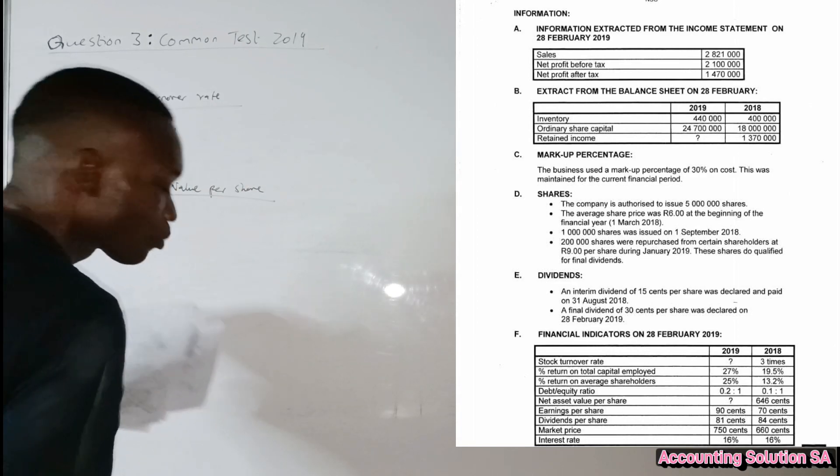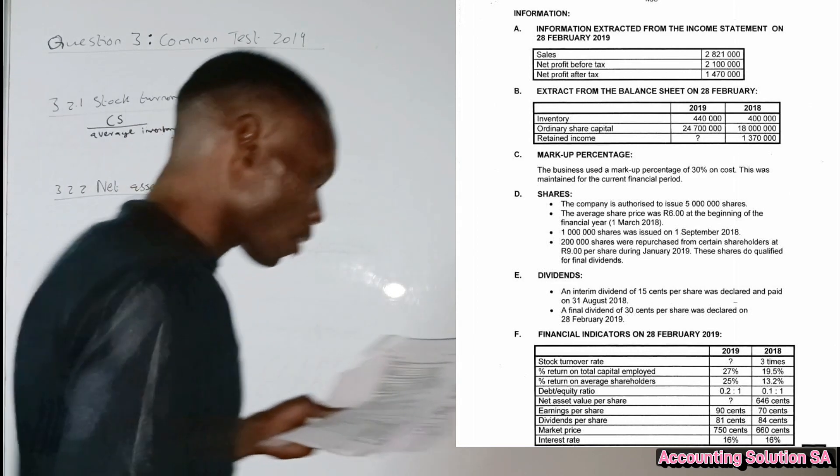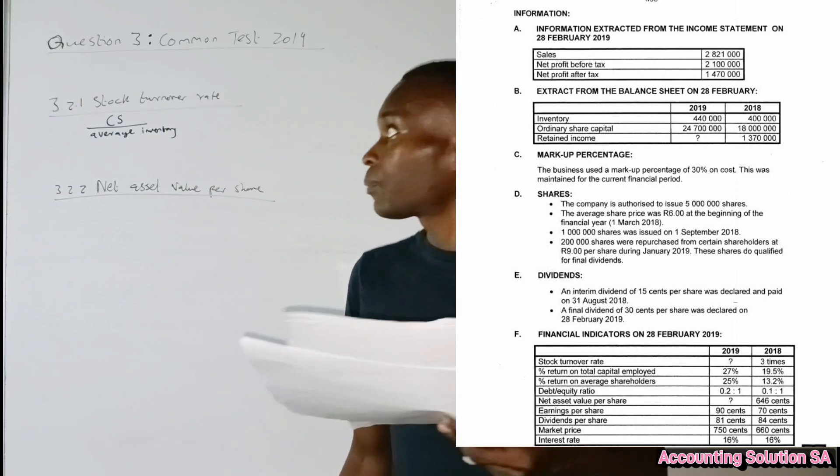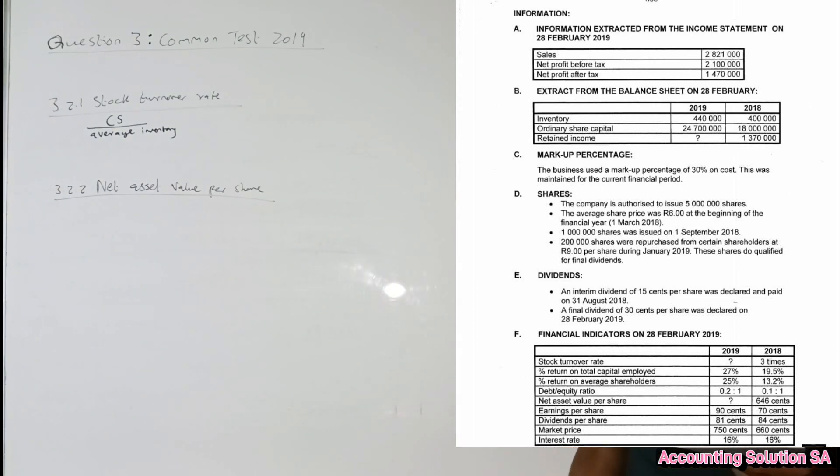So this is the formula that we're going to use. Now let's try to calculate. Our cost of sales, is it given? Information number A, they give us income statement, they only give us sales. But number C, the business use a markup of 30 percent on cost, and this was maintained through the current financial period, the whole year they were using 30 percent.